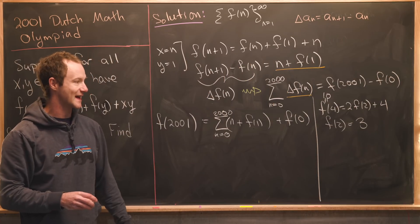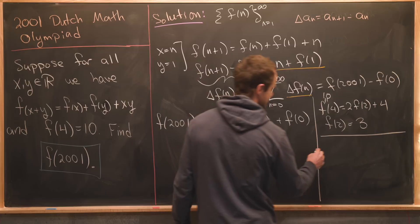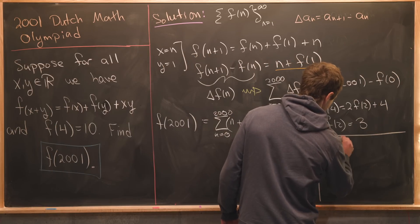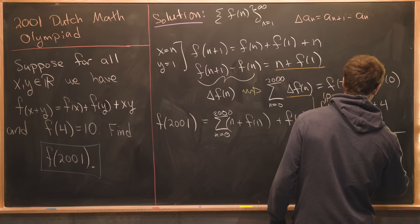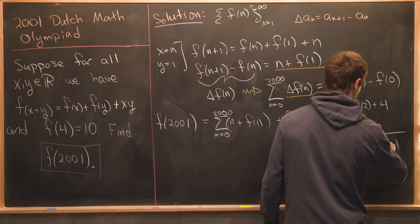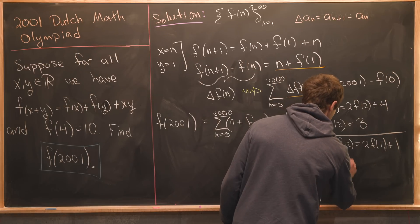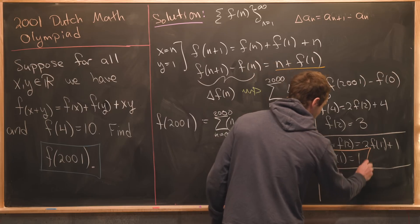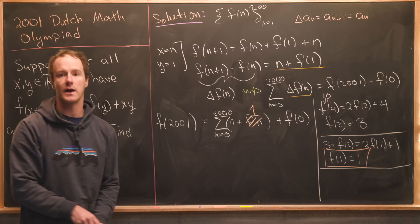Now we can play that same game to calculate f of 1. We see that f of 1 plus 1, well that's going to be 3 which is f of 2, will be the same thing as 2 times f of 1 plus 1. But now simplifying that we see that f of 1 is equal to 1. That's actually a value that we need. We can take this f of 1 and replace it with the number 1.